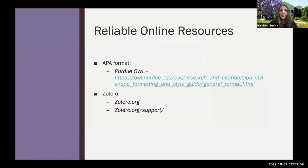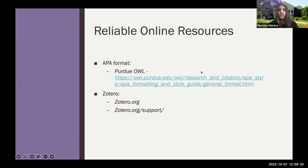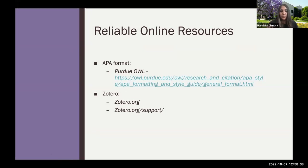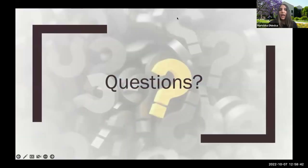That's my basic rundown of Zotero. I wanted to leave a lot of time to answer questions about how to use it. I'll send these slides so they can be made available to you. Two reliable online resources: Purdue OWL has great quick answers to APA formatting questions, and for Zotero you can download it at Zotero.org — their support section has step-by-step manuals and explanations on how to use the software most effectively. With that, I'll open the floor for questions.